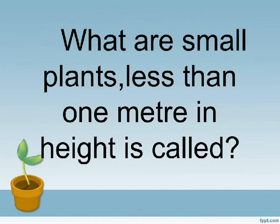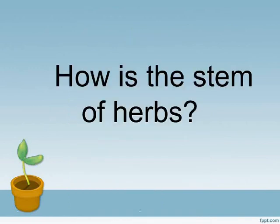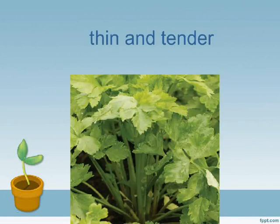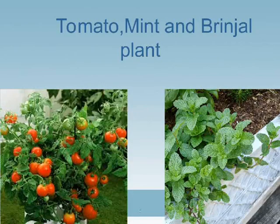What are small plants? Plants less than one meter in height are called herbs. How is the stem of herbs? Thin and tender. Examples of herbs are tomato, mint, and bramble plants.